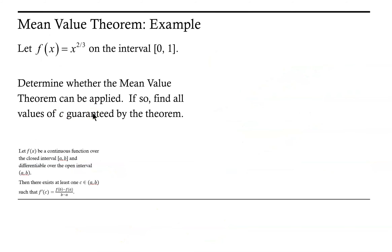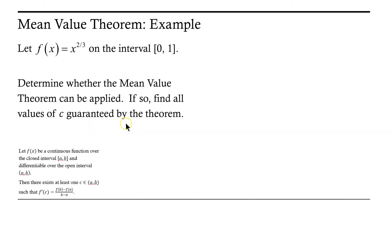So let's look at a quick example. We have f of x equal to x to the 2 thirds on the interval from 0 to 1. First, we need to determine whether or not the mean value theorem can be applied. Then, if so, find all values c that are guaranteed by this theorem.